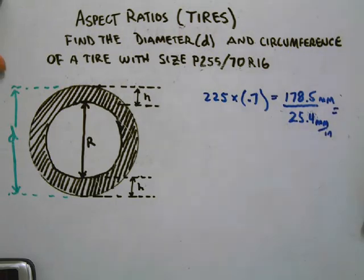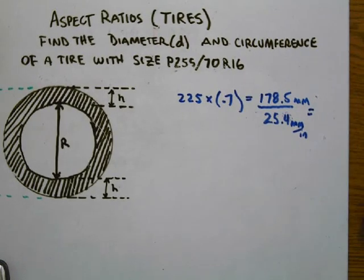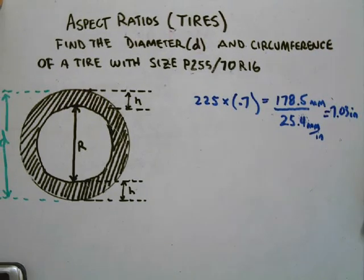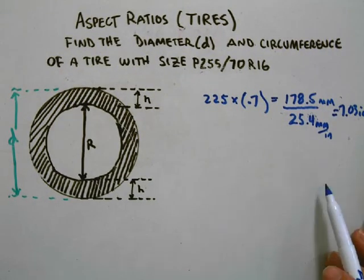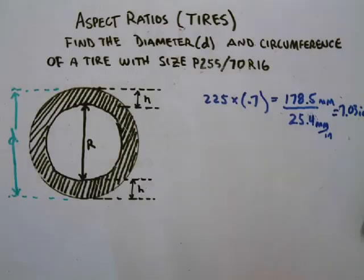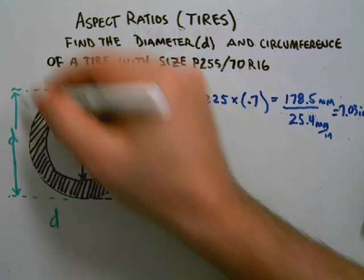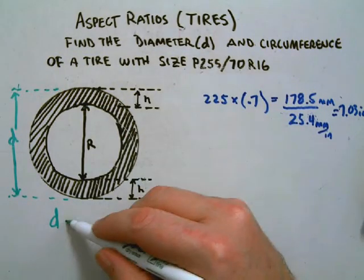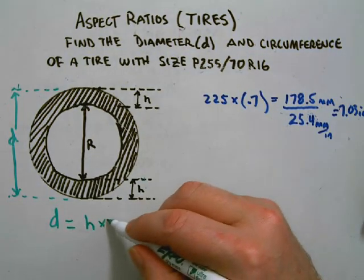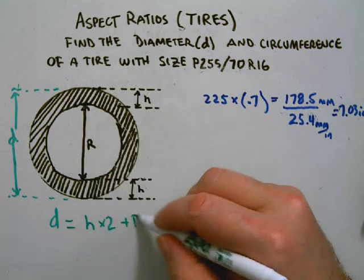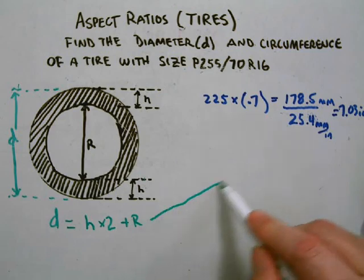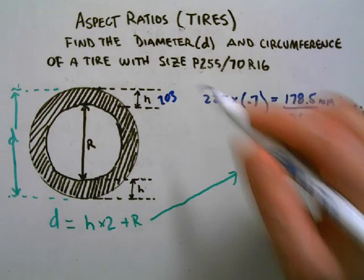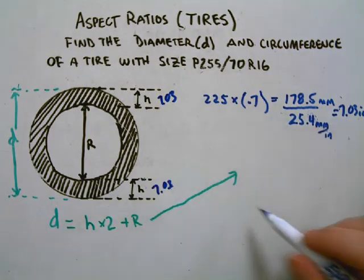Now the diameter actually comes as a formula. It's really this entire height, which is this small height, plus the rim diameter, plus the other small height. So it looks like this: the tire height times 2 plus the rim.